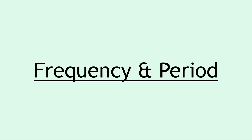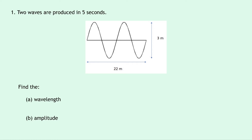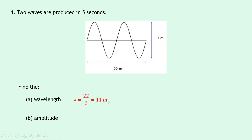Moving on, we're going to cover 3 examples covering the relationship between the frequency and the period of a wave. Question 1 says that 2 waves are produced in 5 seconds, and we're given a picture. We've got a horizontal length of 22 metres, and a vertical distance for the full wave of 3 metres. Part A says to find the wavelength. Remember the wavelength is the horizontal distance for one full wave. We have two full waves fitting into 22 metres, so to get the wavelength we divide 22 by 2, giving 11 metres. Remember this Greek letter lambda is the symbol for wavelength.